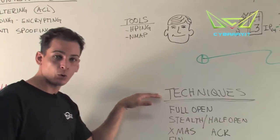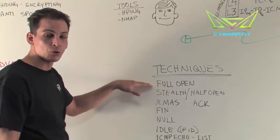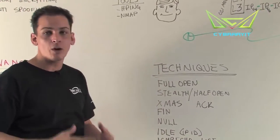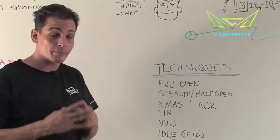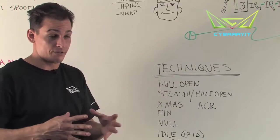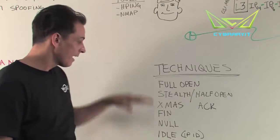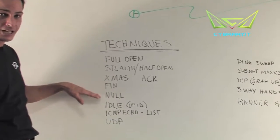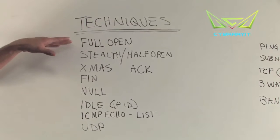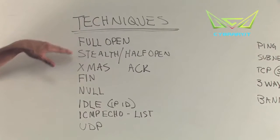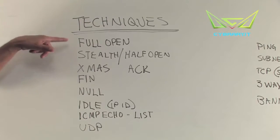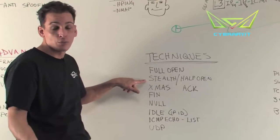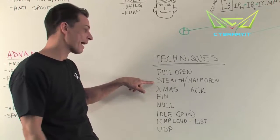Scanning techniques include full open, or full connect, scans. Every system that responds to TCP can do a full TCP connect — doesn't matter if it's Windows or Unix. Some advanced techniques like Christmas scans, FIN scans, or null scans don't get responses from every system, but every system should respond to a full open scan or a stealth half-open scan. The key difference: a full open scan completes the TCP three-way handshake, while a stealth or half-open scan does not.